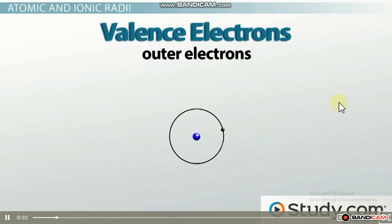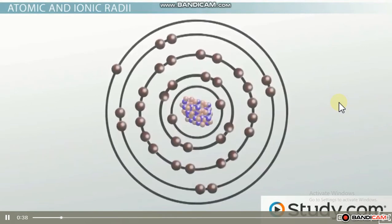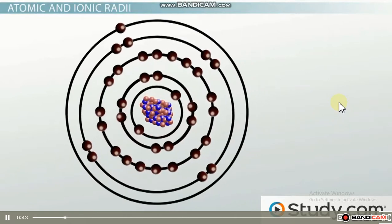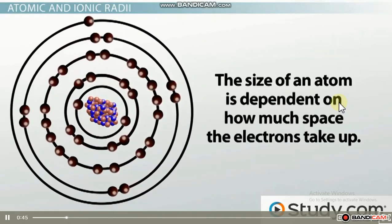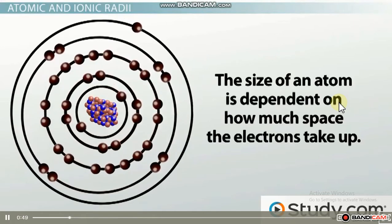If they are zipping around really close to the nucleus in the first energy level, the atom will likely be very small. And if the valence electrons are flying way out in the fifth energy level, the atom will be very large. The size of an atom is dependent upon how much space the electrons take up.